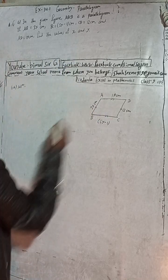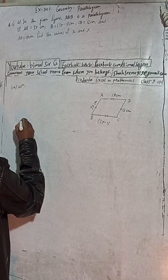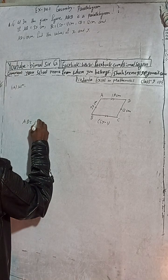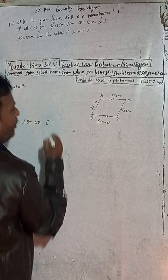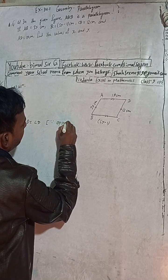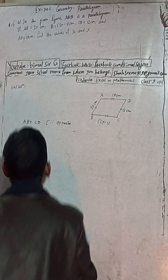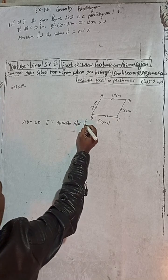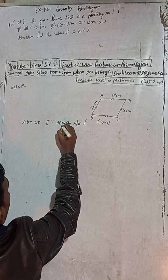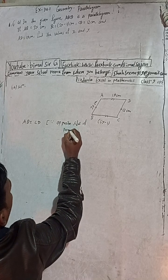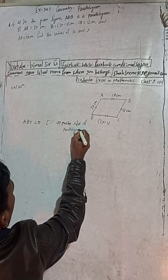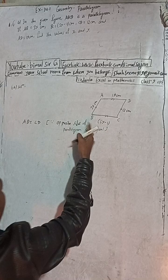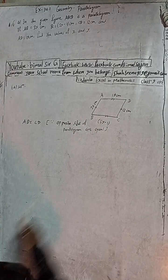So here we can now write AB is equal to CD. The reason for this is opposite sides of parallelogram are equal.